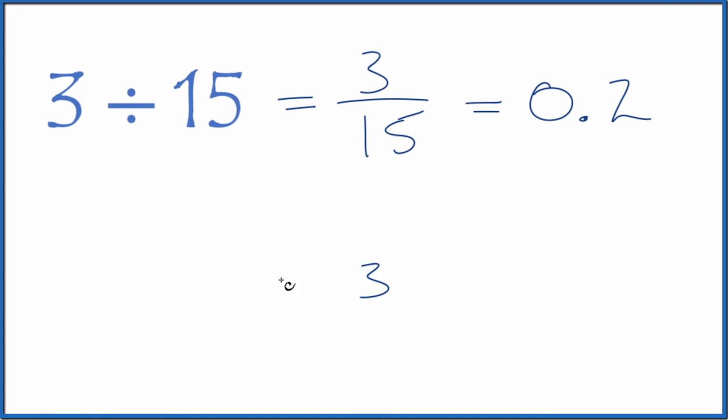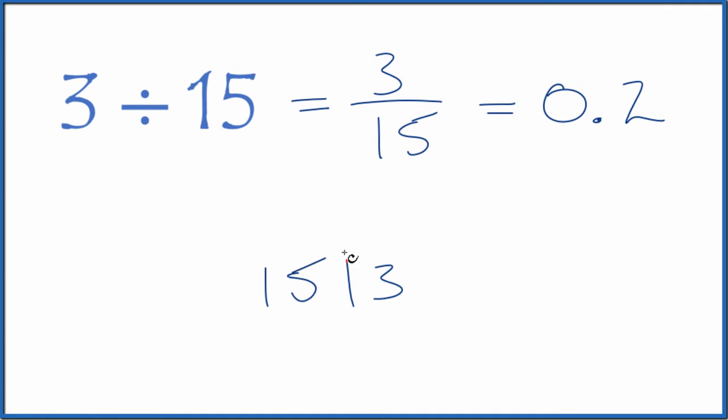We could also take 3 and divide 15 into 3. 15 doesn't go into 3, but we could call this 30, put a 0 and a point up here. Now, 2 times 15, that's 30. Subtract, no remainder. So 3 divided by 15, that's equal to the decimal 0.2. That's what we found before.